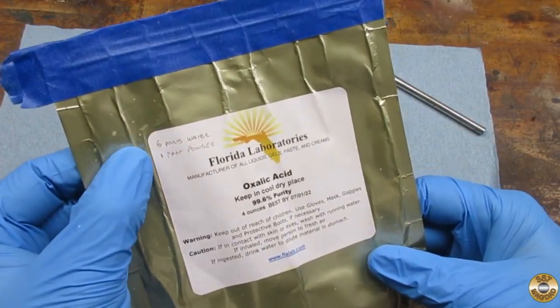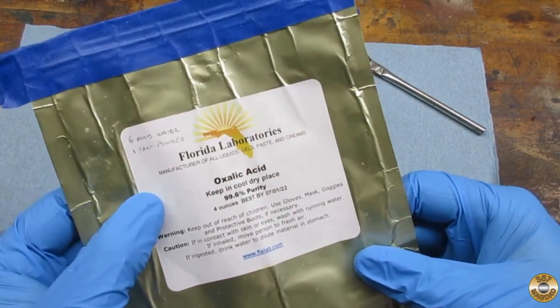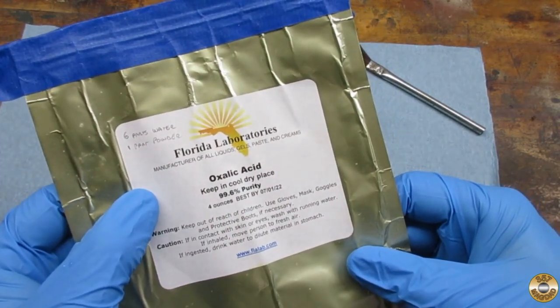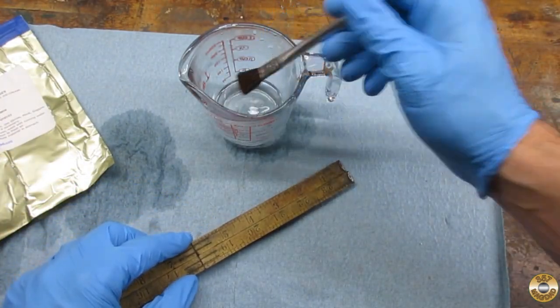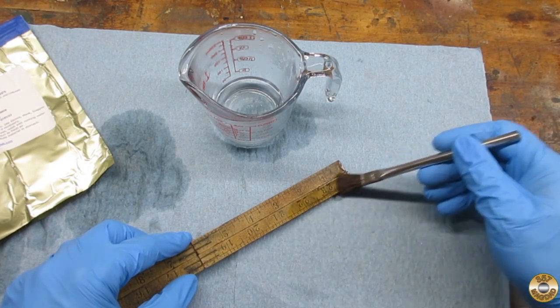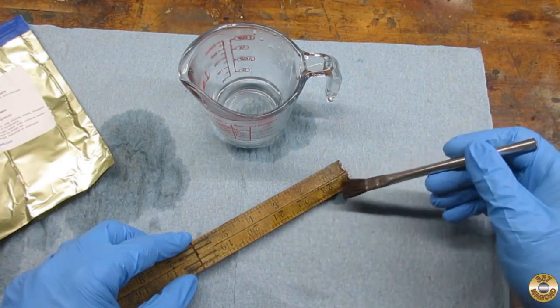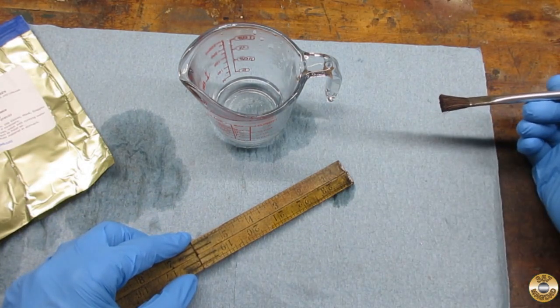My next move was to try some oxalic acid. I added one part acid to six parts hot water. I tested the acid in a small section first. It didn't seem to harm the markings.